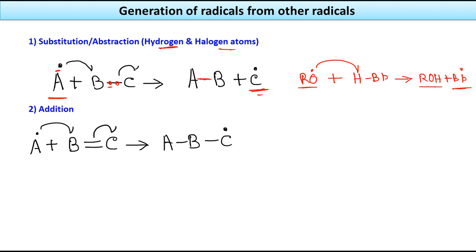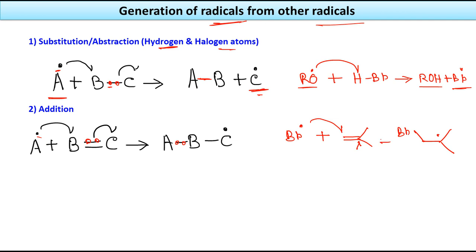The next method for generating radicals from other radicals is addition. A radical A• adds to a double bond B=C: the electron of A• combines with one electron of the pi bond to form a new A–B bond, leaving a single electron on C to give C•. For example, Br• adds to an alkene double bond, forming a new C–Br bond with a carbon radical generated on the adjacent carbon.